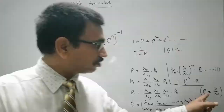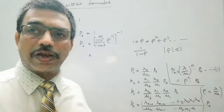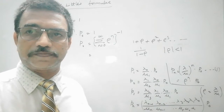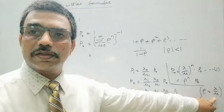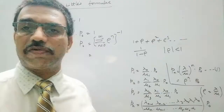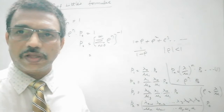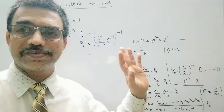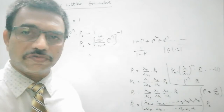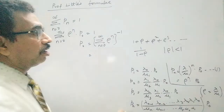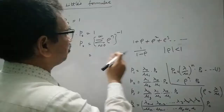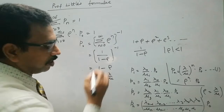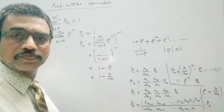We know that the sum of infinite terms in a geometric progression is 1/(1 - common ratio). Here ρ = λ/μ. For any queuing system, the service rate must be greater than the arrival rate — otherwise any queue will explode. So λ < μ, meaning ρ < 1. Therefore the sum Σρⁿ = 1/(1 - ρ), and P₀ = 1 - ρ = 1 - λ/μ. This is the expression for P₀.